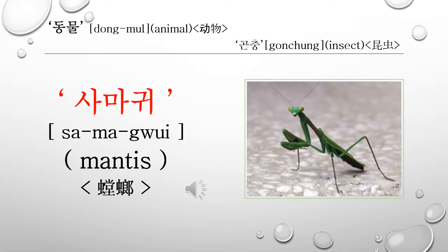This word is 사마귀. 사마귀 is called a mantis in English. Let's read it again: 사마귀, 사마귀.